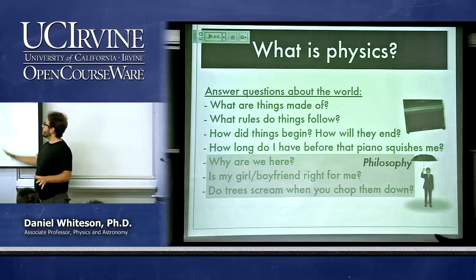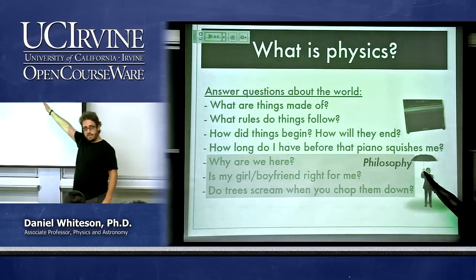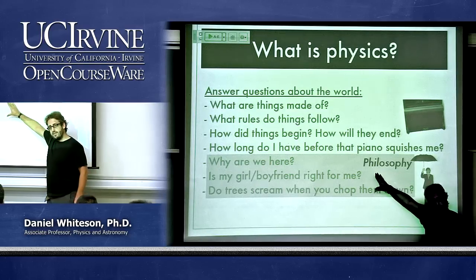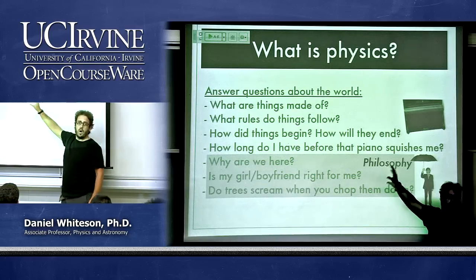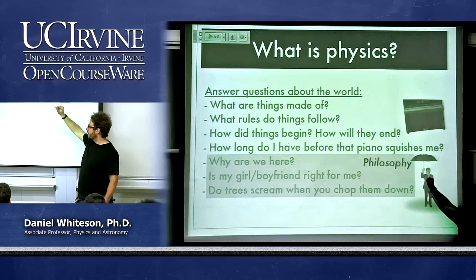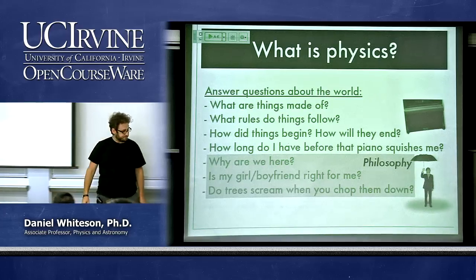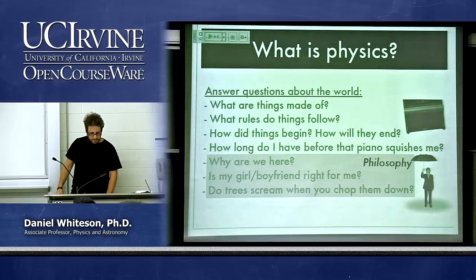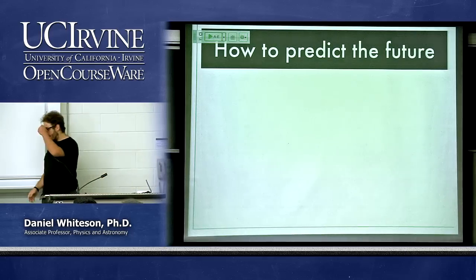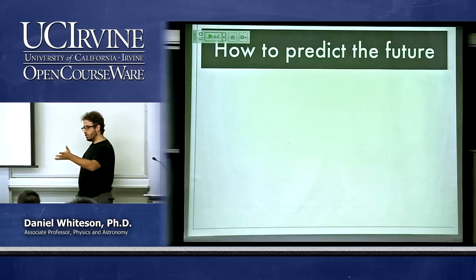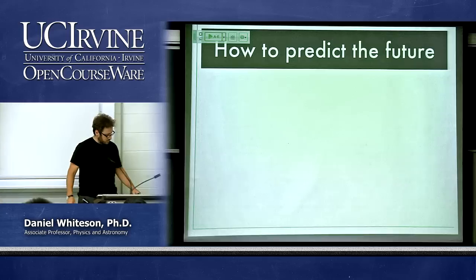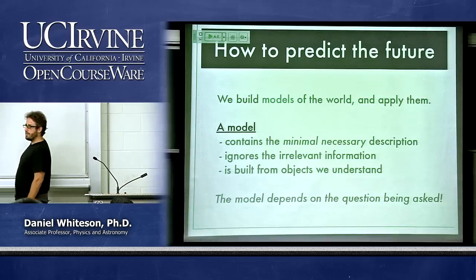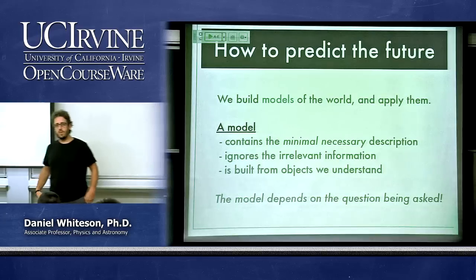Other fascinating questions — like 'why are we here?' — are better suited for philosophy because they don't have scientific answers. Physics is also a tool for predicting the future. When we do physics, we build a model of the world: a minimal necessary description that ignores irrelevant information and is built from objects we know how to manipulate mathematically.